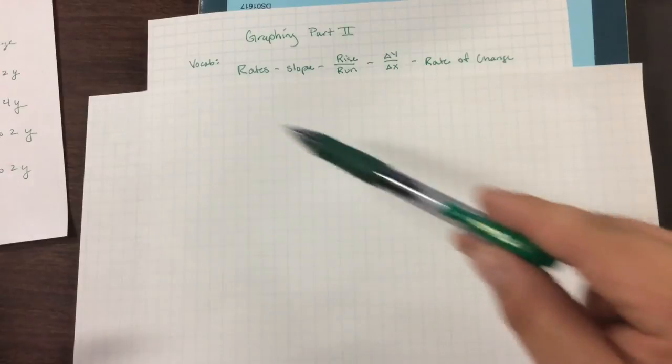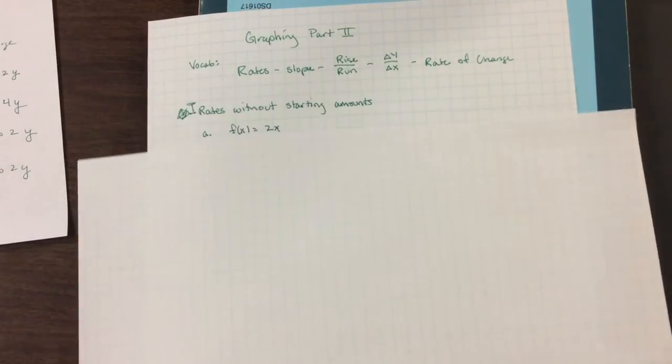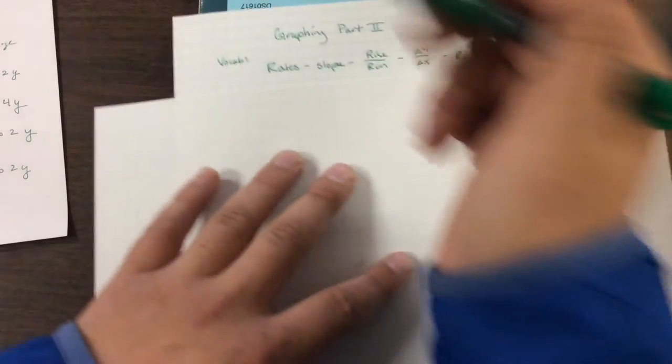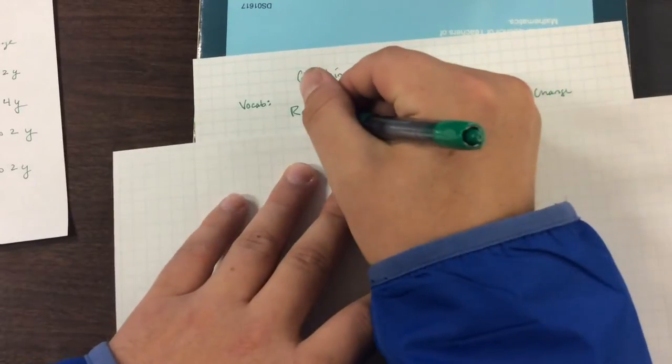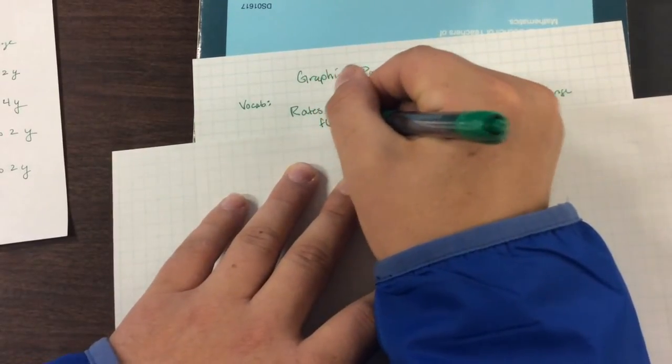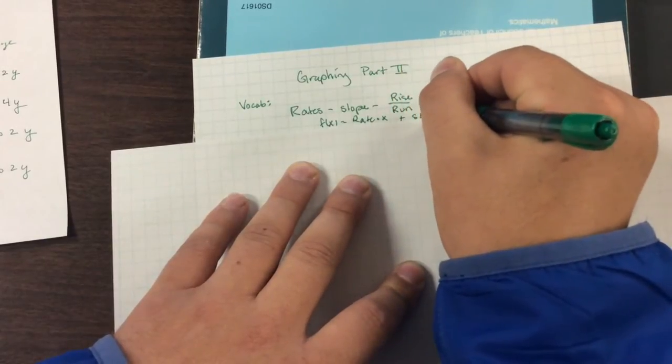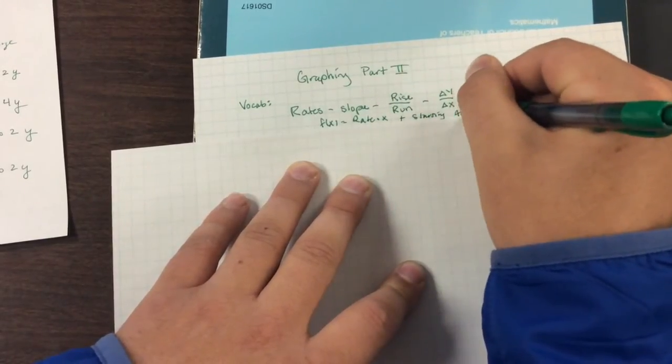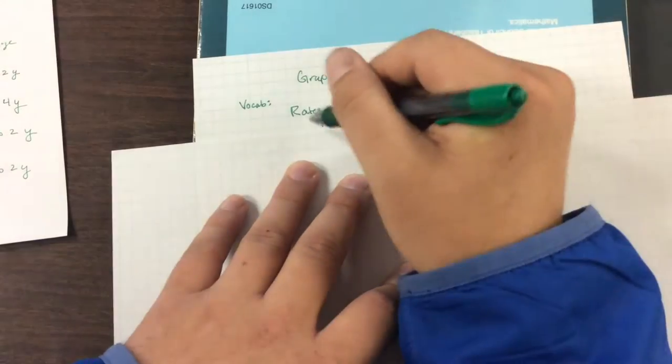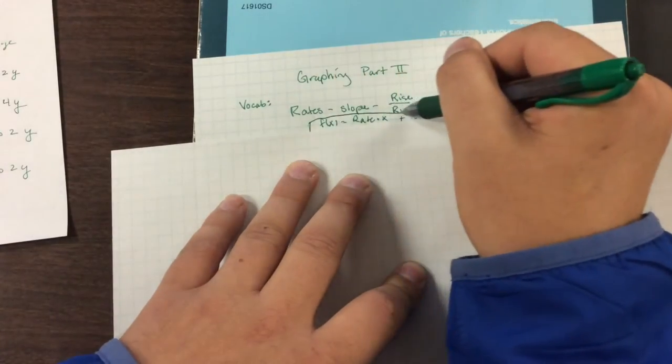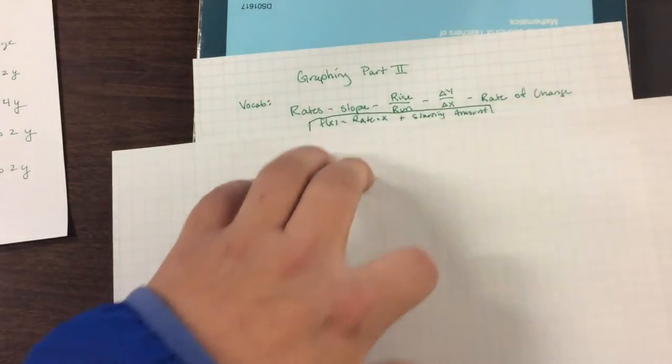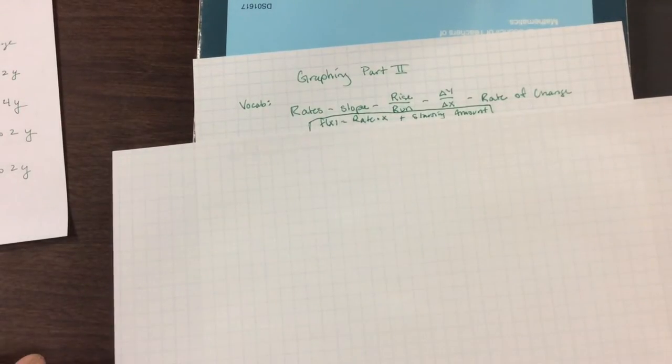These are all ways to describe what's going on in these formulas. It's f of x equals some rate times x plus a starting amount. This is the big idea that we are going to cover in this first semester, is rate times x plus starting amount.